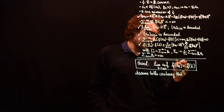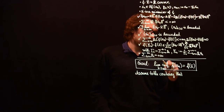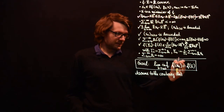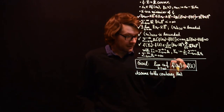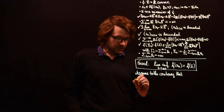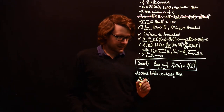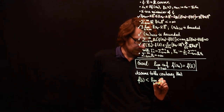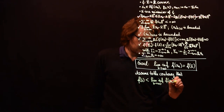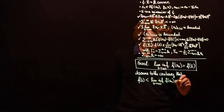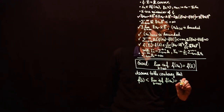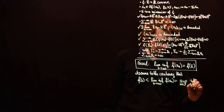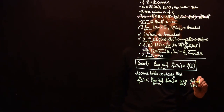Since f(xn) is always greater or equal than f at the minimizer, the greater-or-equal direction is guaranteed. So we assume to the contrary that we have strict inequality: f(x̄) is strictly less than the liminf as n goes to infinity of f(xn). By definition, this liminf is the supremum over n ≥ 0 of the infimum over k ≥ n of f(xn).